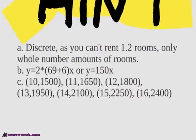Here are your answers. It is discrete because you can't rent 1.2 rooms. So notice, here is your graph. You're going to be spending $150 because you want at least two rooms, and 10 rooms, 11 rooms, 12 rooms, 13, 14, 15, and 16.